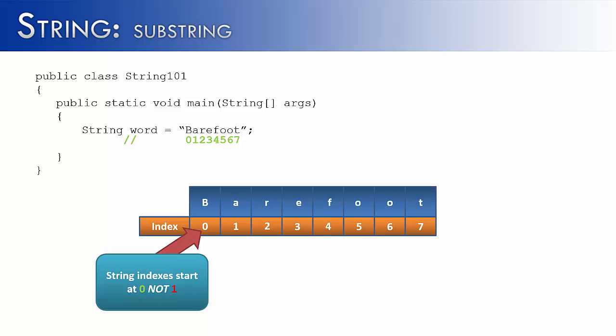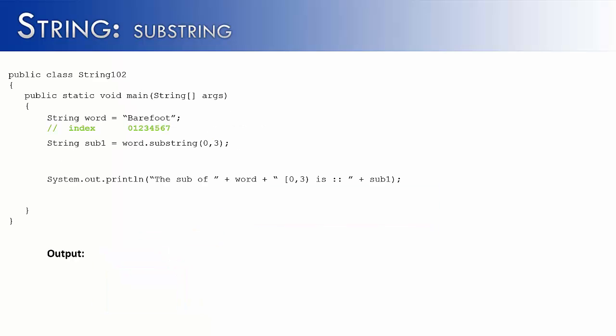Now when I have a string, it's important to remember that the index always starts at 0, not 1. So if I was looking for the capital B, I would be looking for index 0, not 1, which would give me lowercase a. Now that we understand that, we can move forward with the method substring.